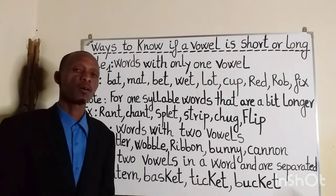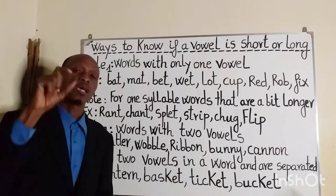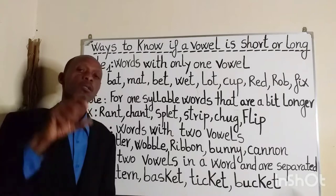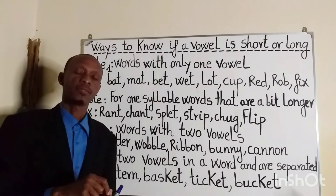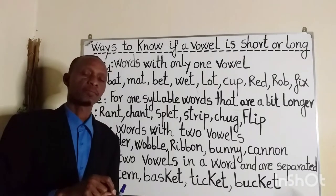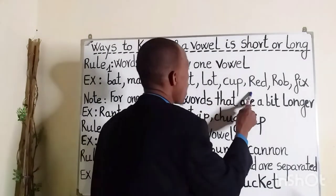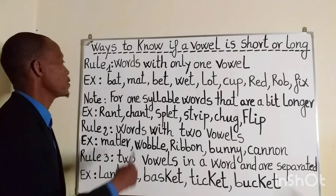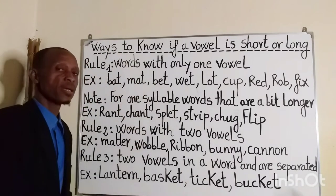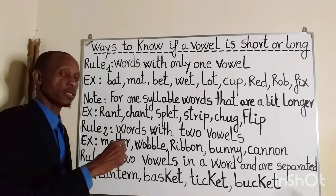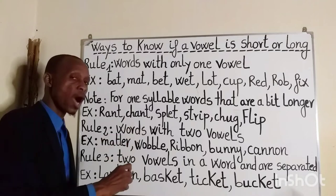If a word has only one vowel and this vowel is in the middle of the word, the vowel sound is usually short. This is especially true for very short words. As you can see, in each example word the vowel is in the middle and the word is very short. Note that this rule is similar and can apply to one-syllable words.